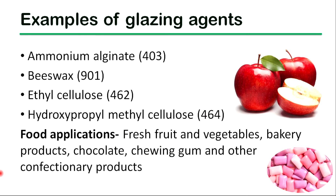Ammonium alginate, beeswax, ethyl cellulose, and hydroxypropyl methyl cellulose are some examples of glazing agents. Foods such as fresh fruits, vegetables, bakery products, chocolate, chewing gum, and other confectionery products use glazing agents during their processing.